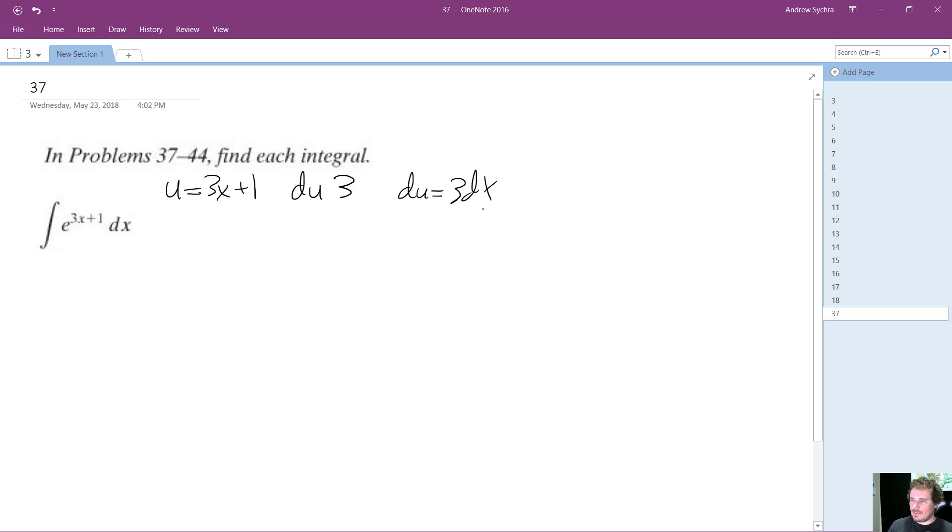So essentially, one third du is equal to dx. We have to do that to compensate for it.